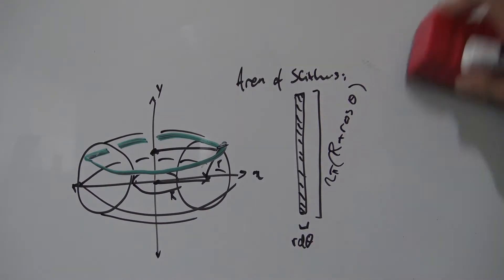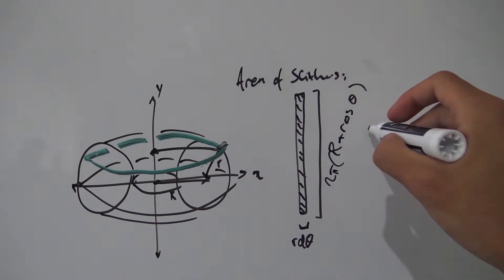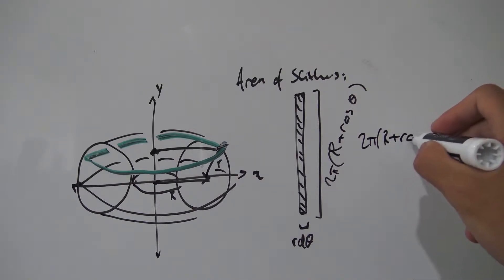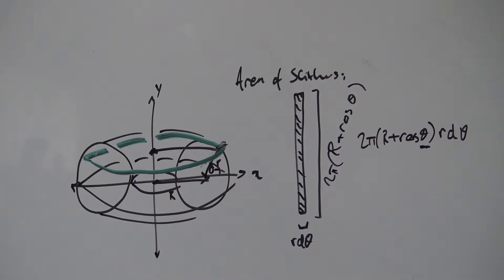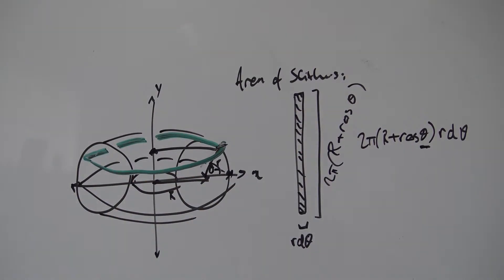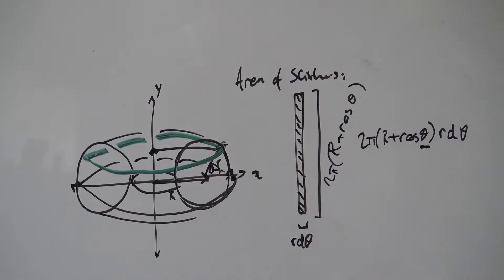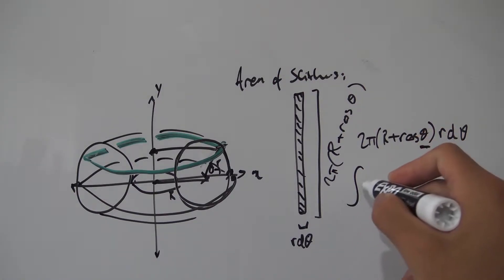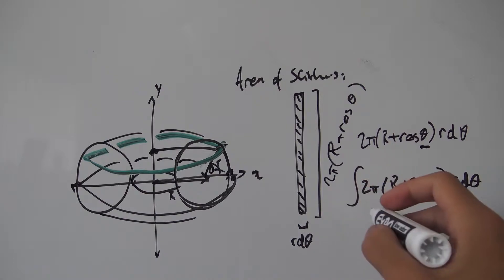Now we have both dimensions of our little rectangle. Multiplying them together, the area of our little sliver becomes 2π(R + r·cosθ)·r·dθ. This is the general formula for each sliver. Now we take the integral, but first we need to figure out where theta starts and ends. Taking theta from 0 and sweeping all the way around the body of the donut to 2π hits every single point, which is what we want. So the surface area of our donut is the integral from 0 to 2π of 2π(R + r·cosθ)·r·dθ.